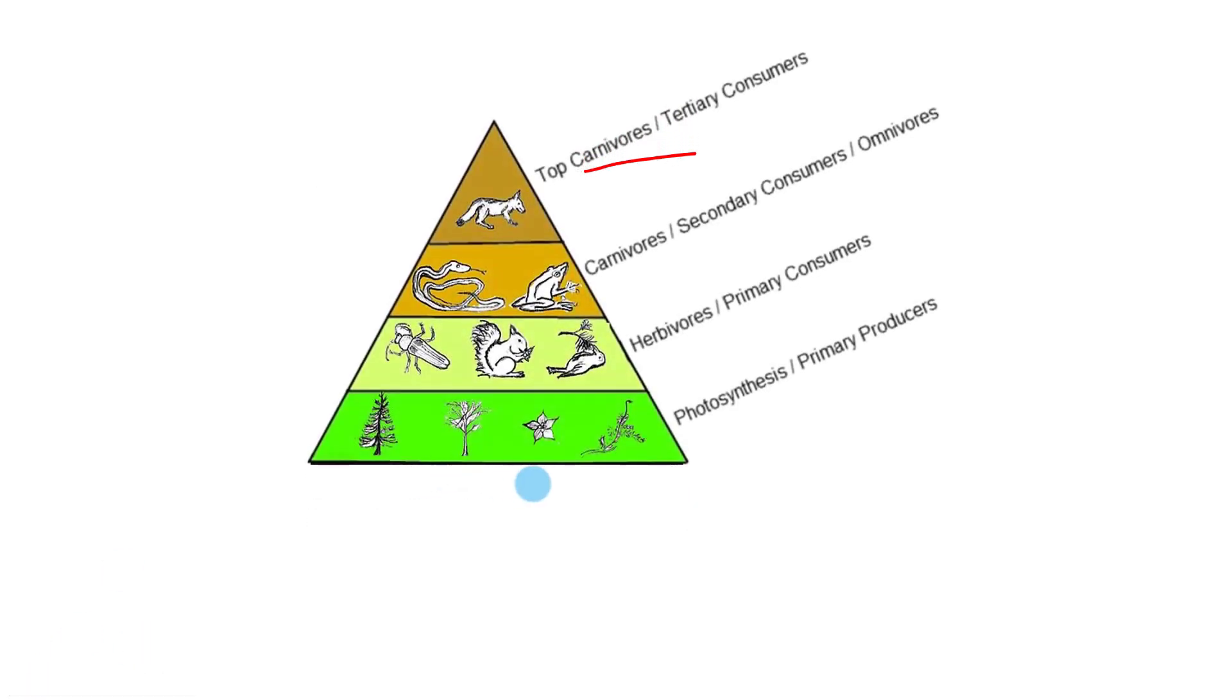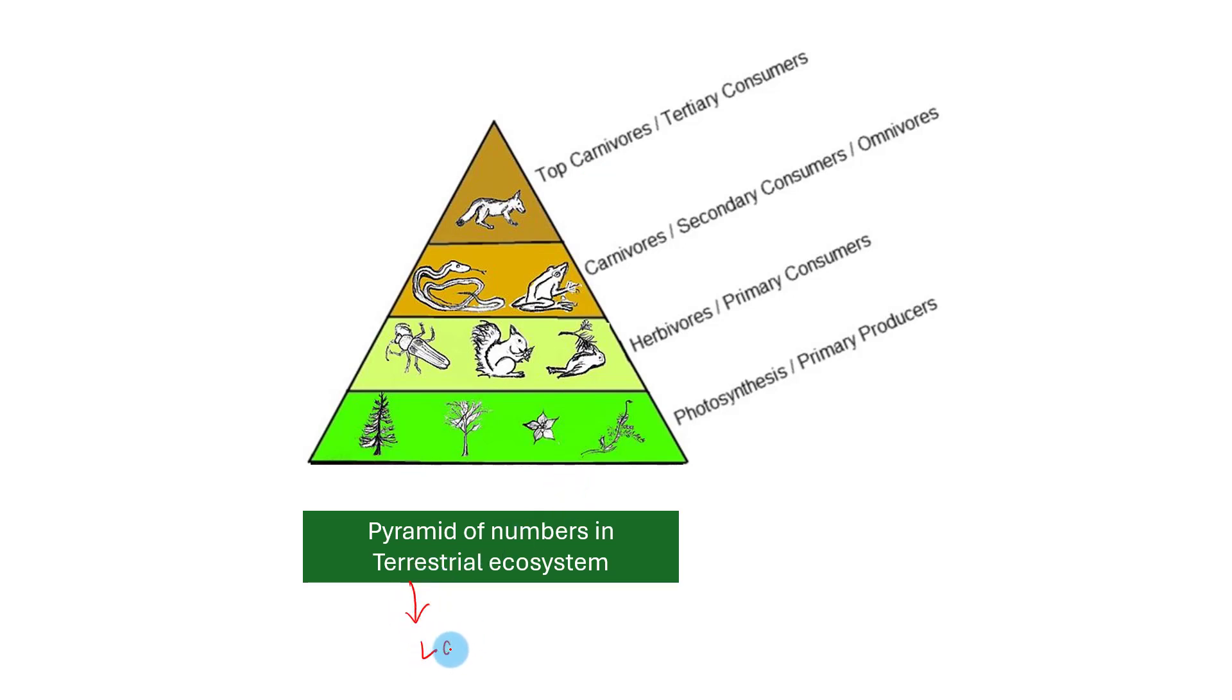This is a pyramid of numbers that exists in a terrestrial ecosystem. Terrestrial means land-based ecosystems like forest ecosystems and desert ecosystems. In a forest ecosystem, the number of producers is highest. The number decreases in herbivore level, and the population decreases at each successive trophic level. The least population is found in the top carnivore level.